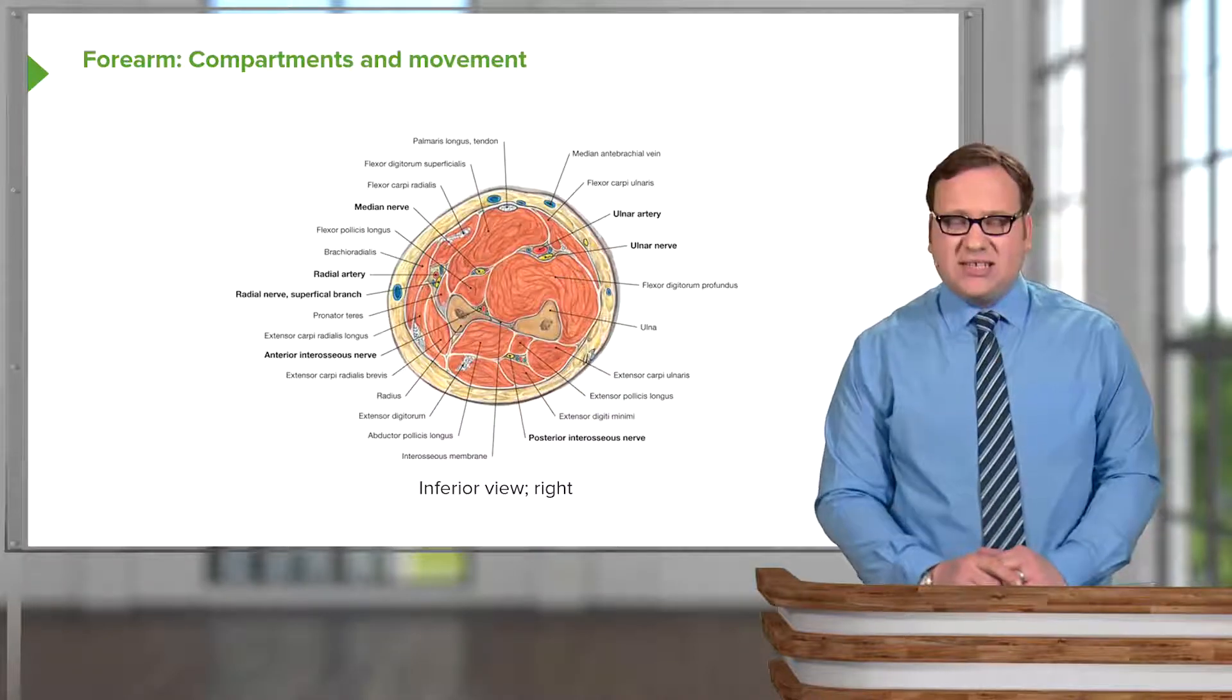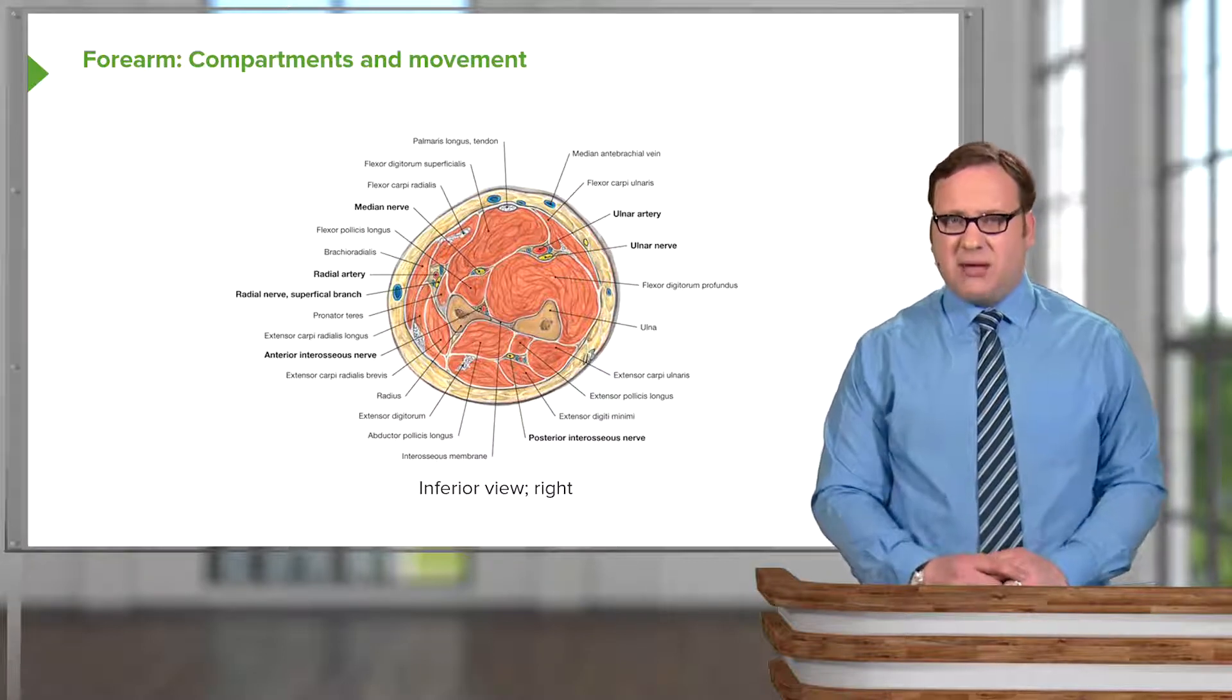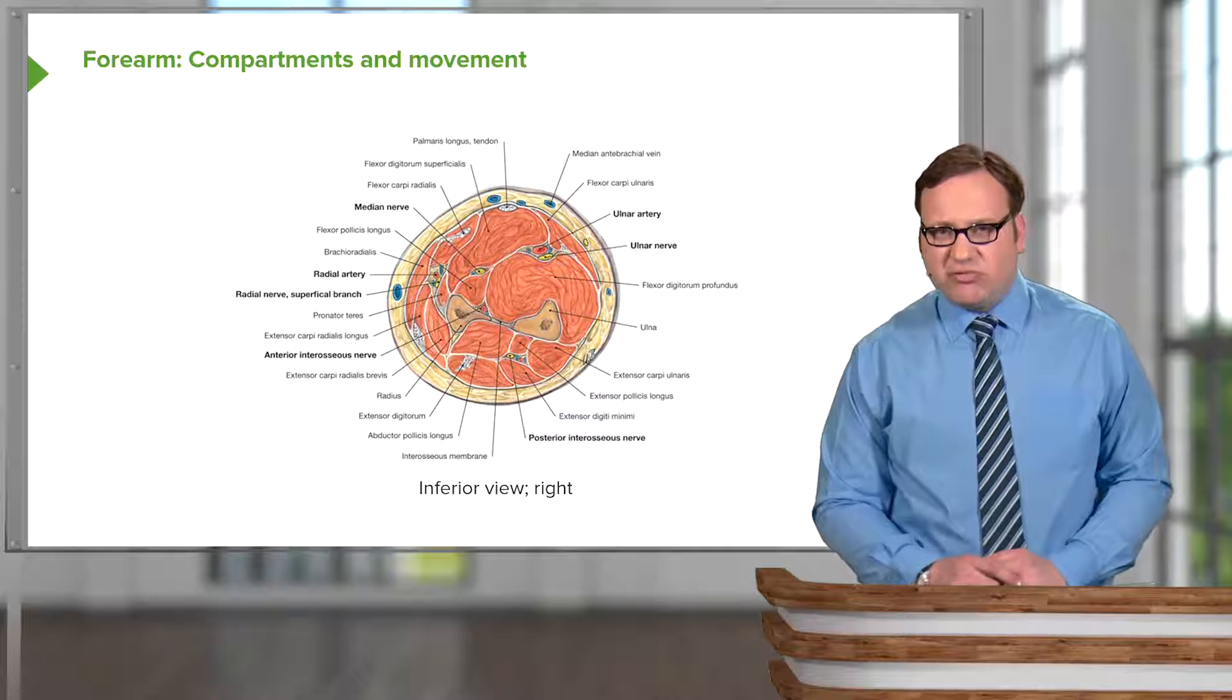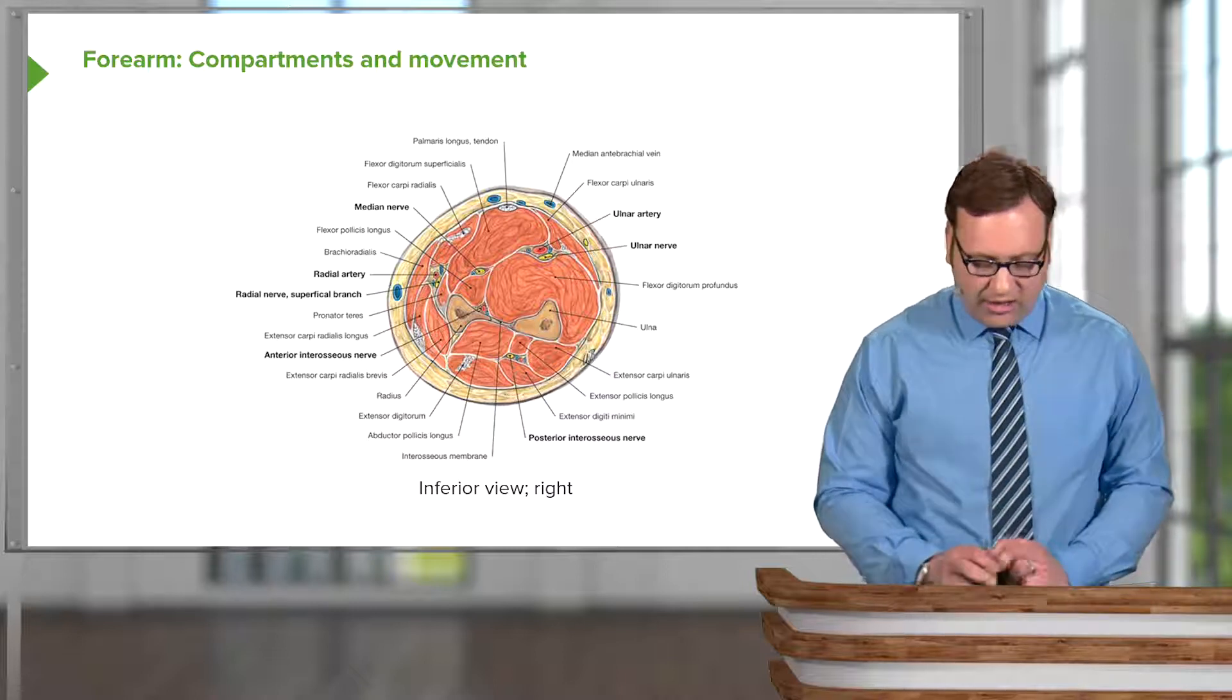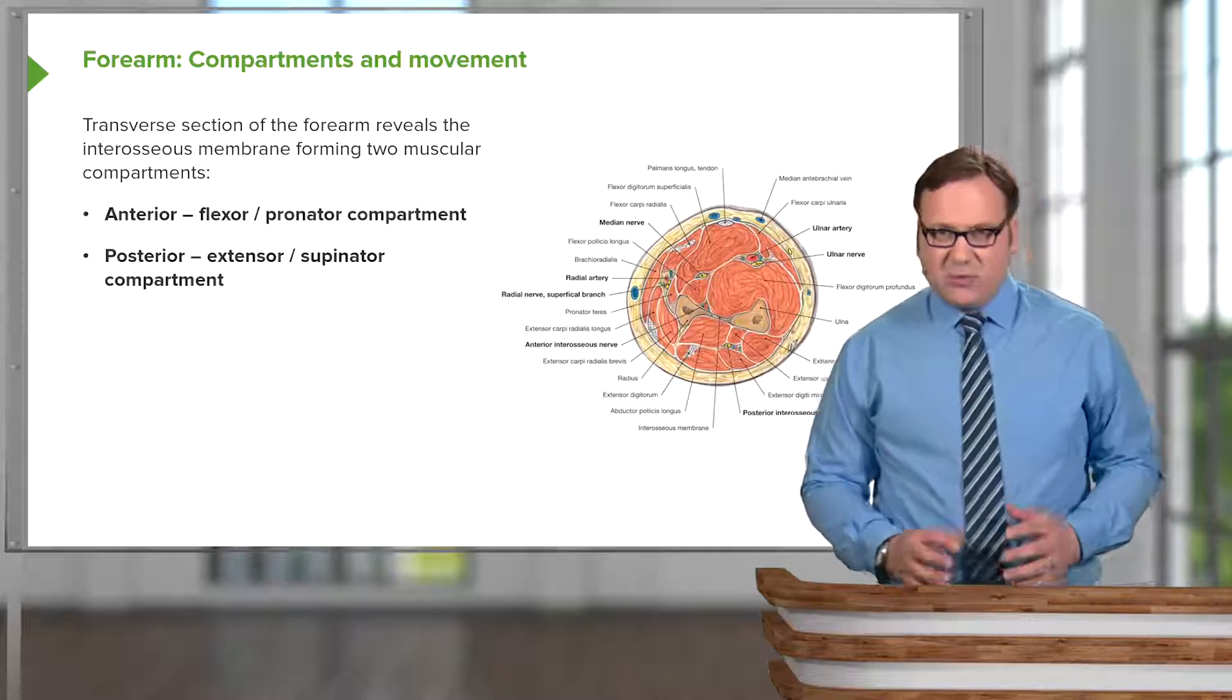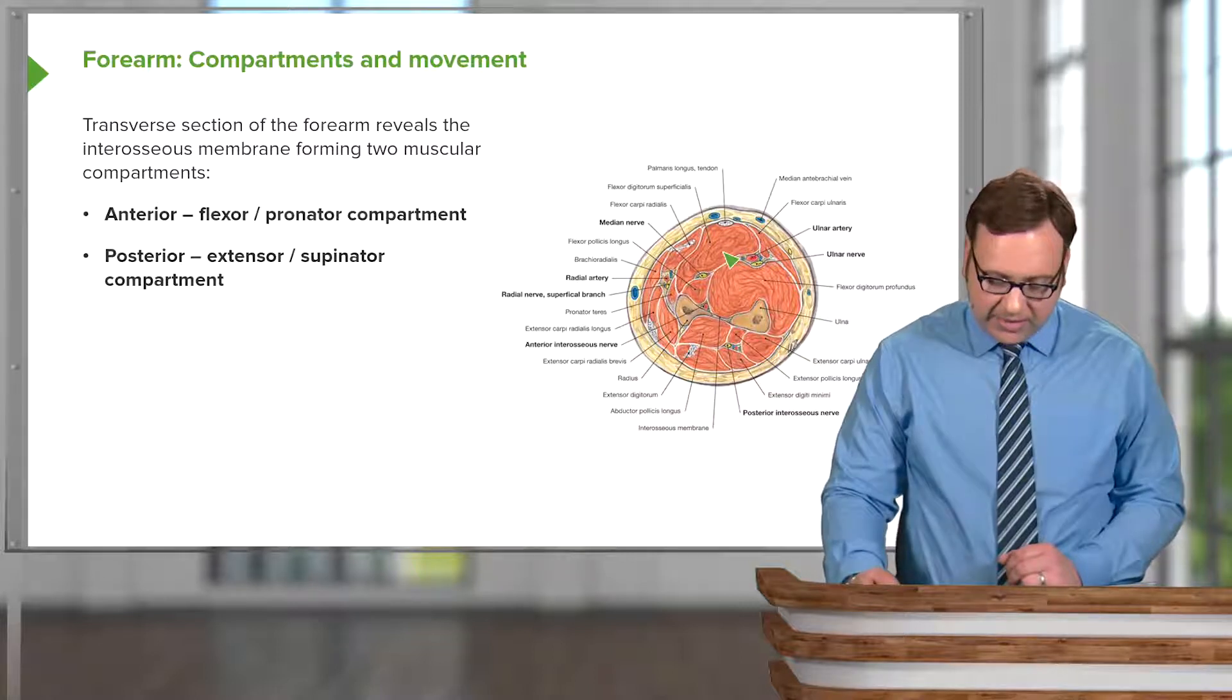So here we can see a cross-section through the forearm, showing the various muscles in their compartments, the interosseous membrane that's running between the two bones, the radius and the ulna. And we can see that with this transverse section, we can divide the forearm into this anterior compartment here and this posterior compartment.